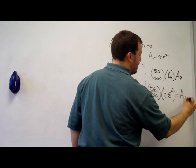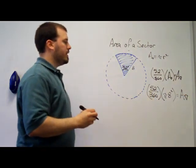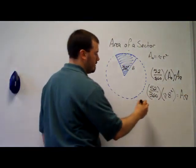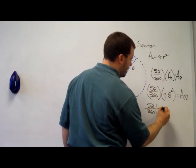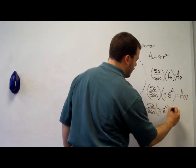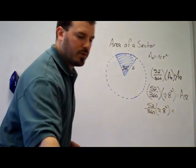and that's our area of the sector. So, 52 over 360 times pi r squared. We'll go to the calculator.